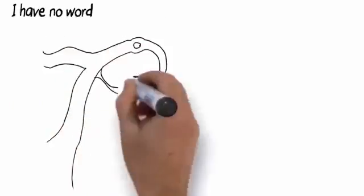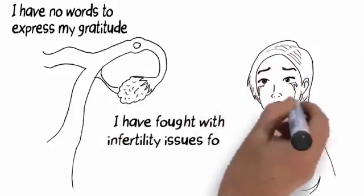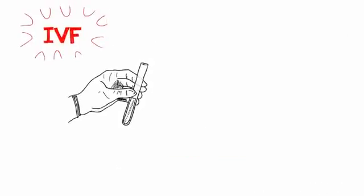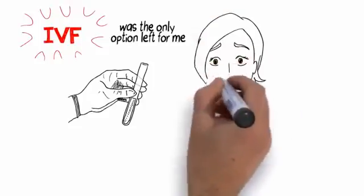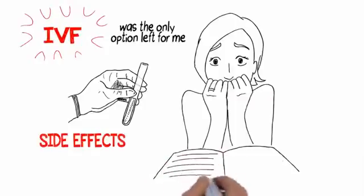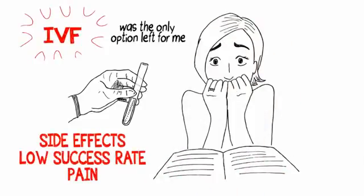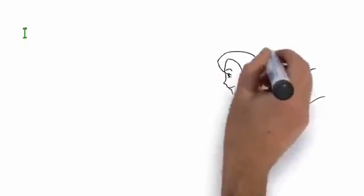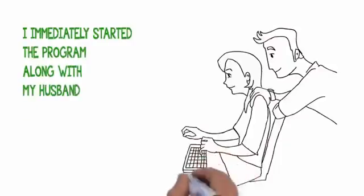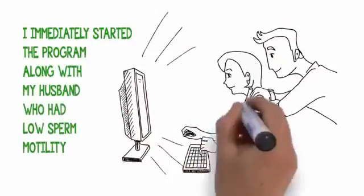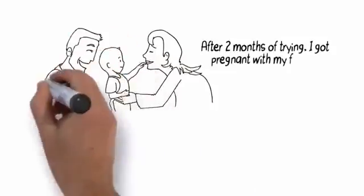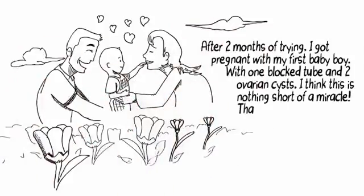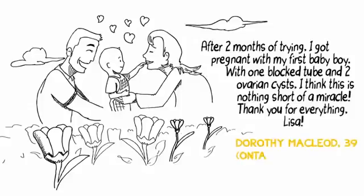I have fought with infertility issues for more than a decade. My OBGYN said one of my tubes was blocked and insisted that IVF was the only option. I was desperate and terrified. My husband and I kept looking for a natural alternative. After two months of trying, I got pregnant with my first baby boy with one blocked tube and two ovarian cysts. I think this is nothing short of a miracle. Dorothy McLeod, 39, Ontario, Canada.